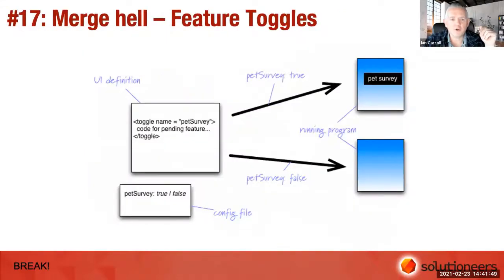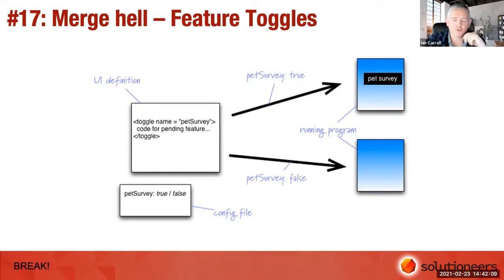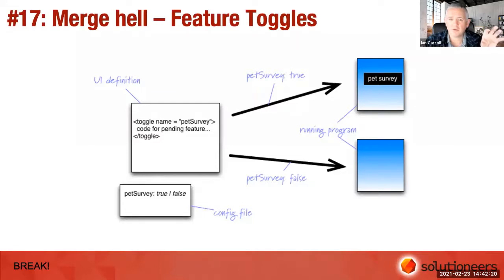Number seventeen: addressing merge hell. Some teams have unnecessarily complicated branching strategies, and when they come to merge and release, it's a problem of who goes first. A technique called feature toggles uses trunk-based development — you decouple your code release from the feature enablement, so you can essentially release unfinished code that is switched off.